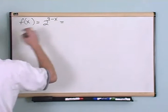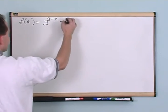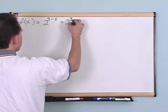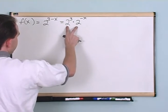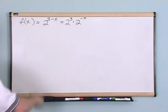Well the first thing I would do is I would split this up as 2 to the third times 2 to the negative x. Notice you can do that because it's the same base - you would be adding these exponents and that's where you started.